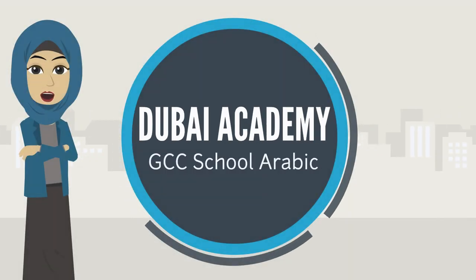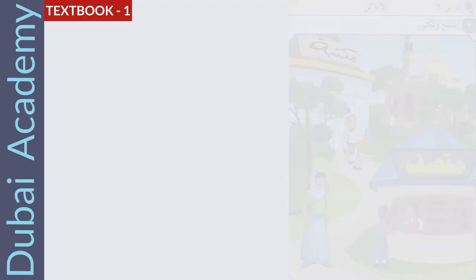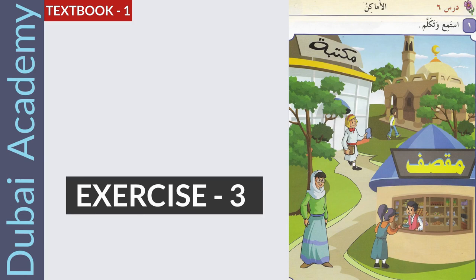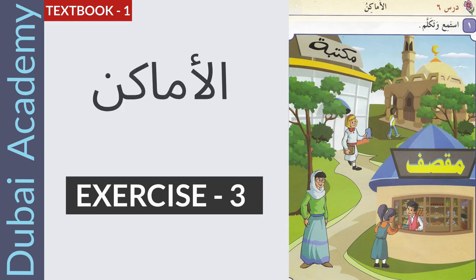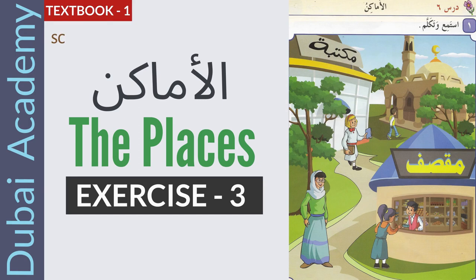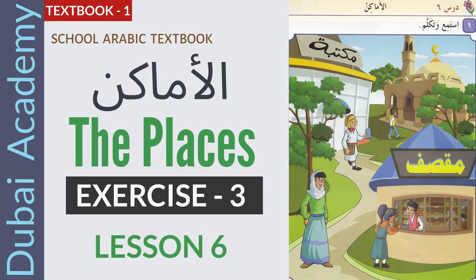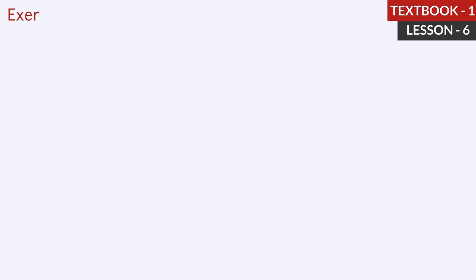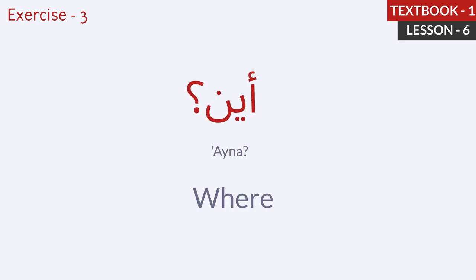Marhaban! Welcome to Dubai Academy. Today we are going to do exercise 3 from the lesson Al-Amaakin — The Places. Arabic textbook, Ohai Bula Arabiya, Lesson 6. Are you ready? Let's start. In this exercise, we are going to learn how to answer the question Aina — Where? — using the names of the places.